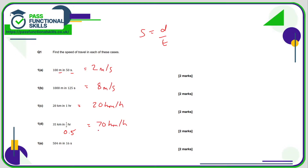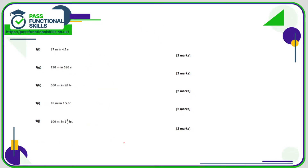Some of you might not like that answer because you're thinking: I'm dividing and the number's got bigger. Well, that's what happens when you divide by a number that is less than 1. And for E, 504 divided by 16 comes to 31.5, and again that's metres per second. 27 divided by 4.5 is 6 metres per second.